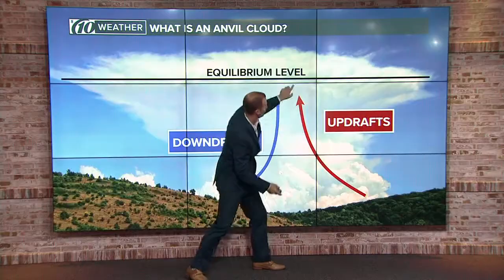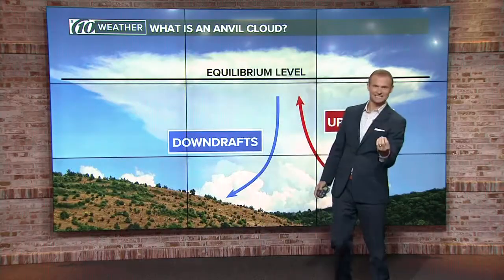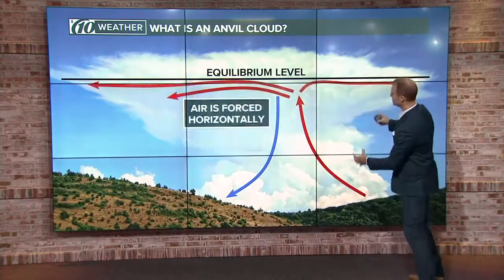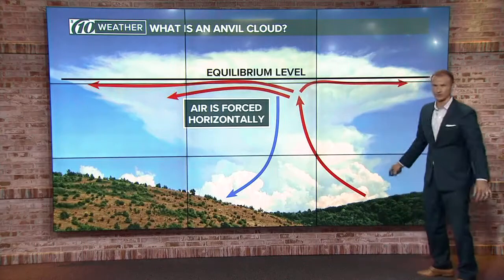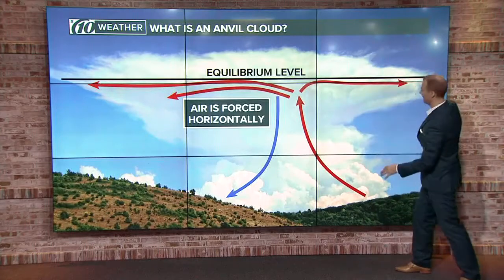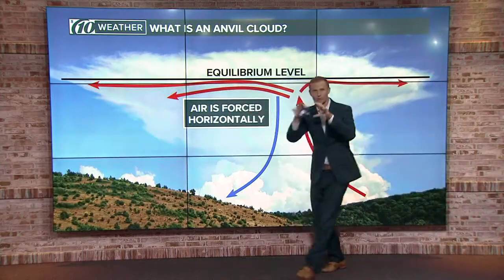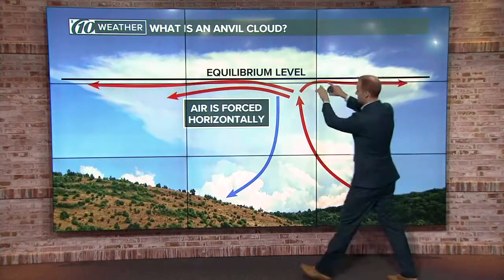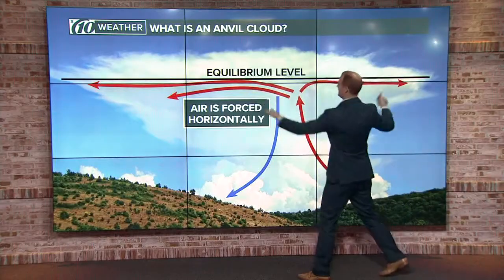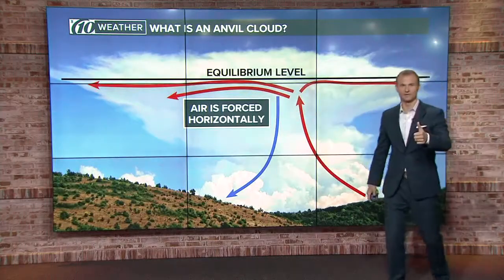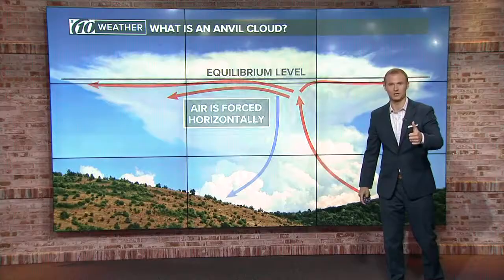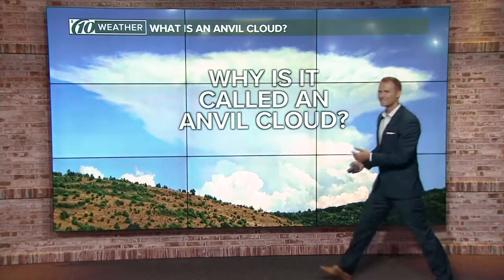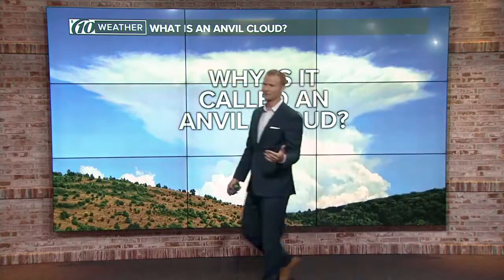So these updrafts hit this almost like a ceiling, and the air in the updrafts is forced outward — forced back and then forced forward, forced horizontally — and that's why you start to get that sort of expanding part at the upper level of the cloud. So you have that shape, but again, why is it called an anvil cloud?